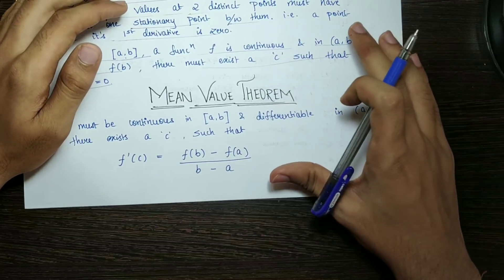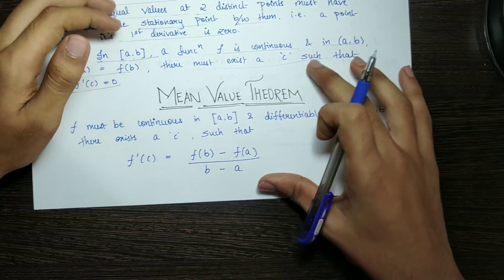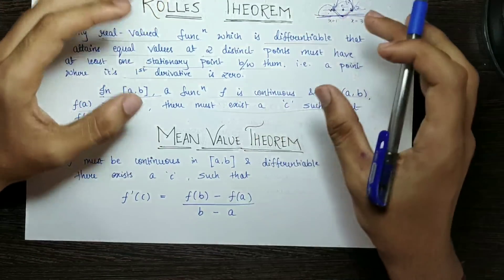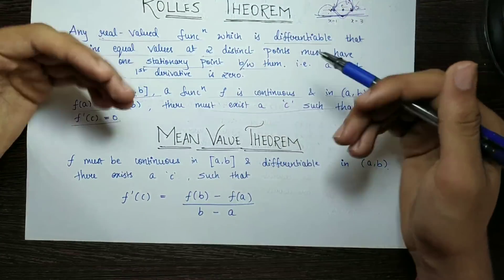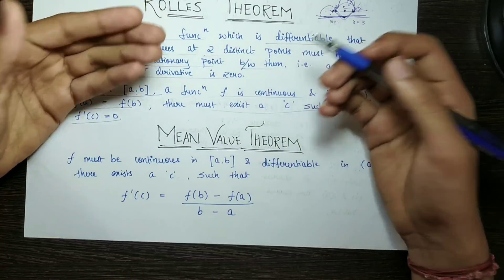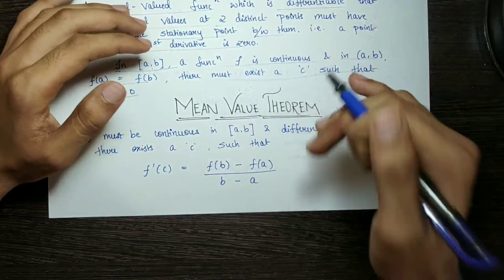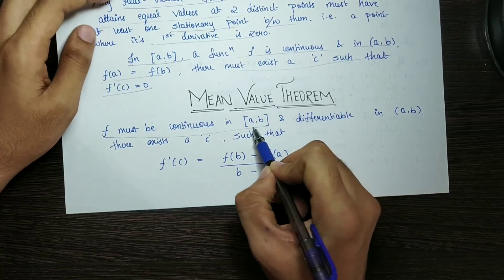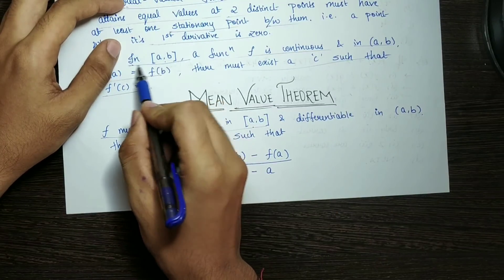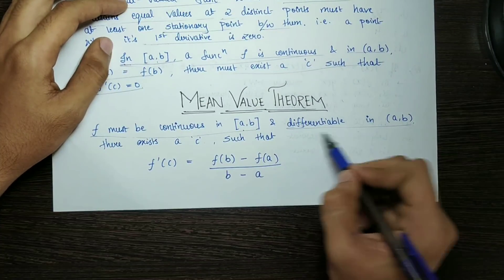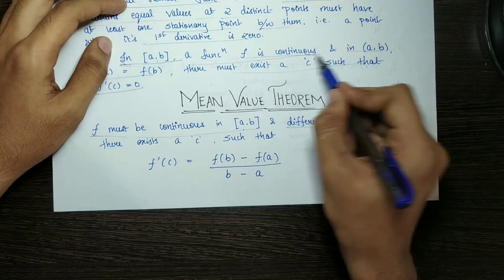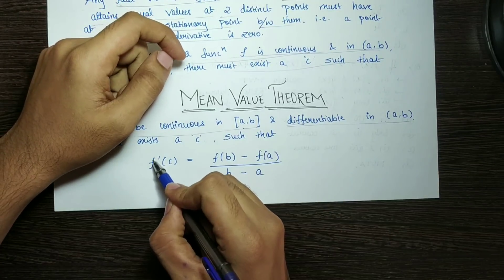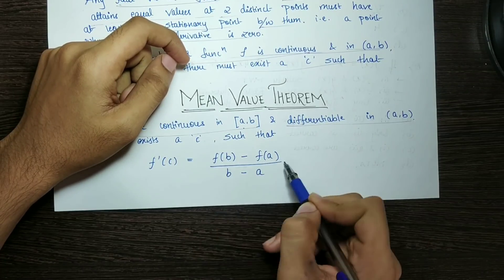Next is the Mean Value Theorem — MVT. This is almost along similar lines. The conditions are mostly the same: f must be a continuous function on the closed interval [a, b], and differentiable on the open interval (a, b). But there exists a c such that f'(c) equals f(b) minus f(a), divided by b minus a.